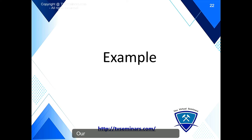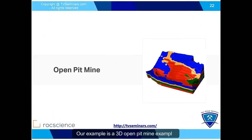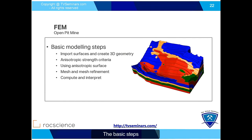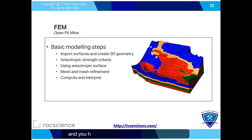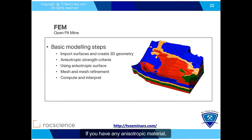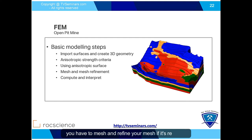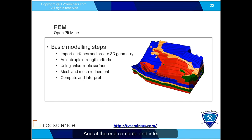Let's look at our example — a 3D open pit mine example. I'm going to show you how to create the model. The steps are: you have surfaces like the pit surface, and you create your model with anisotropic surfaces. Then you mesh your model, use restraints, and finally compute and interpret results.